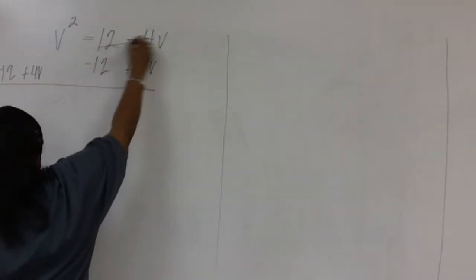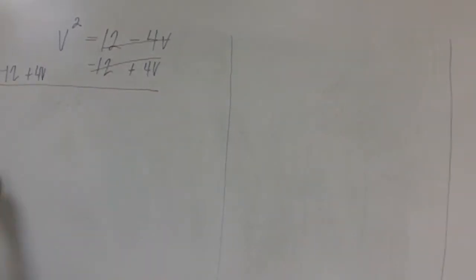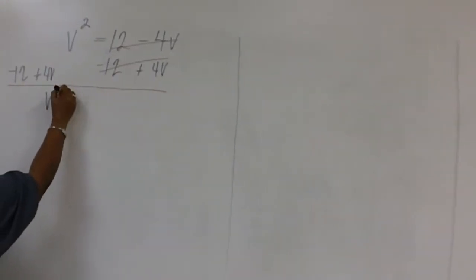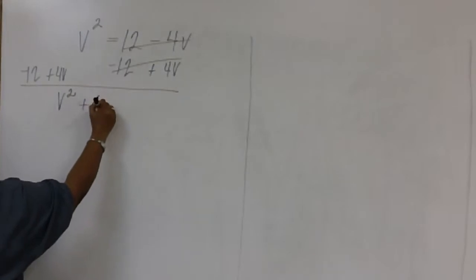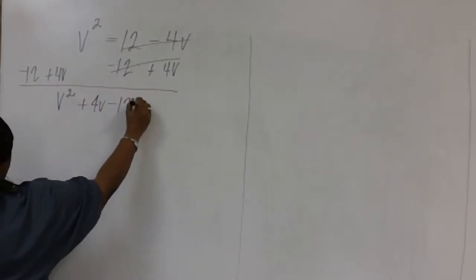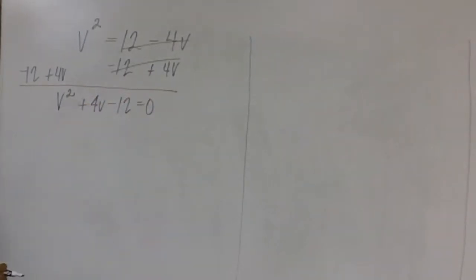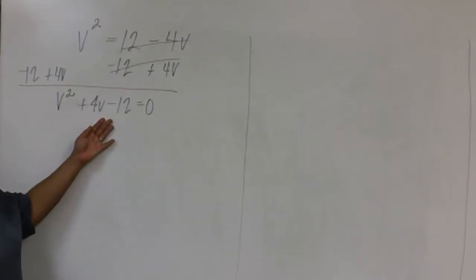Notice that everything cancels out on the right side. So we're left with V squared plus 4V minus 12 equals zero. So this is the equation that we'll start with.